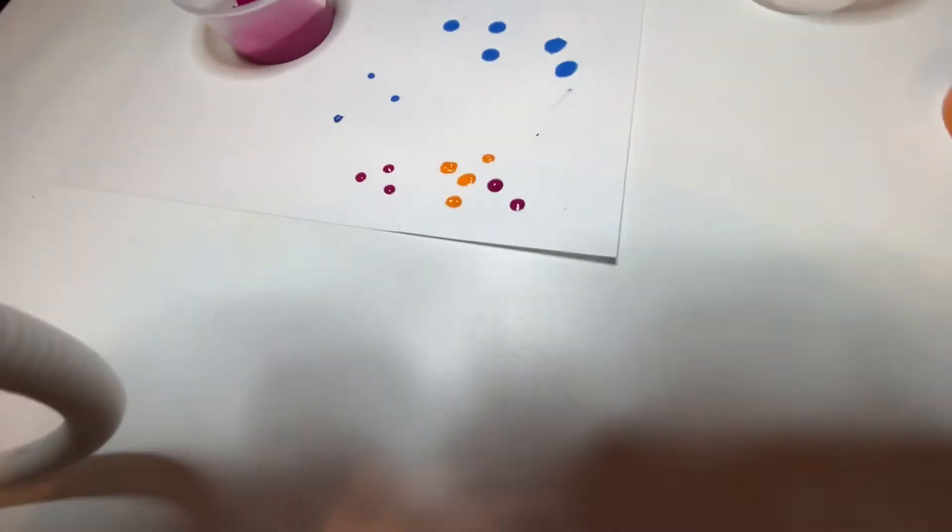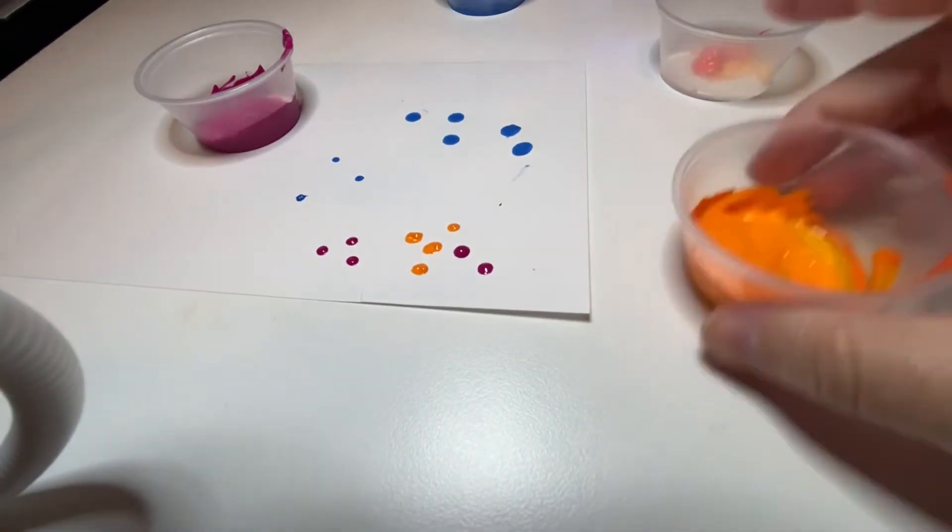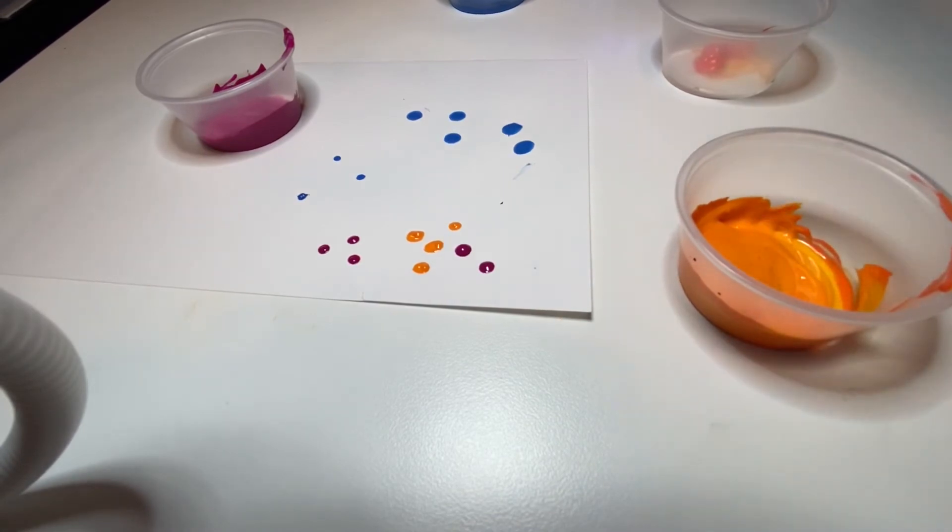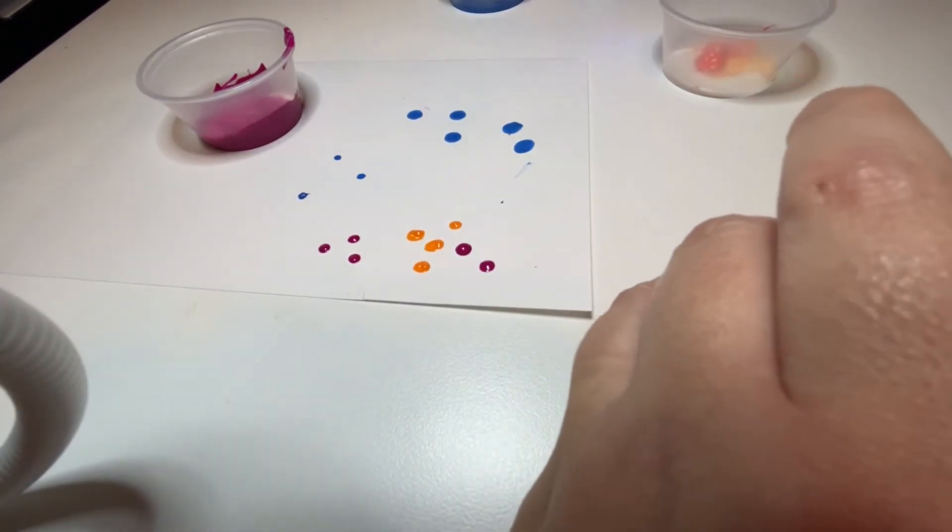And that's all there is to this method. It's just thinning out your paint so that you can do dots and using different tools to get those dots.